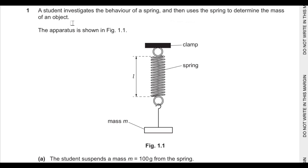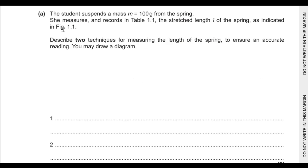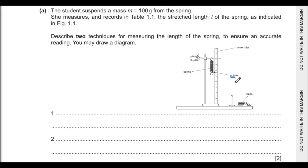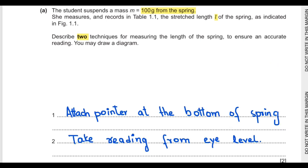The student uses the spring to determine the mass of an object. The apparatus shows a spring and mass attached to a clamp, where L is the stretched length of the spring. The student suspends a mass of 100 grams. The question asks to describe two techniques for measuring the length of the spring to ensure an accurate reading. You should attach a pointer at the bottom of the spring, and your eye should be perpendicular to the meter ruler at eye level to avoid parallax errors.